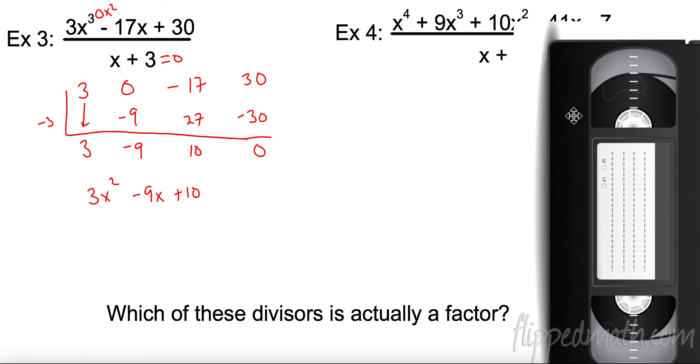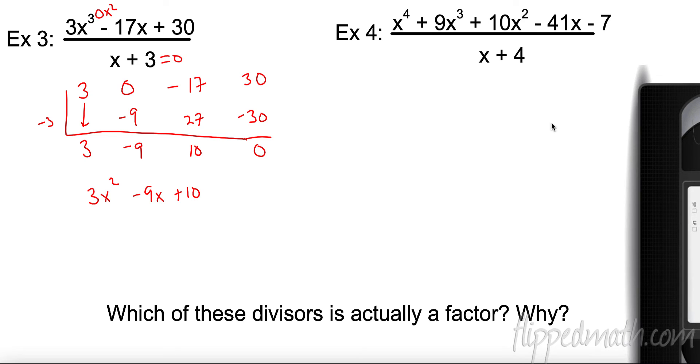All right, let's try another one over here. What is the long one? All right. 4, 3, 2, 1. All right, I got everything. That's good. That's the good news. So here we go. 1, because it's not written. 9, 10, negative 41, and negative 7. All right, and set this equal to 0. So I'm going to divide by negative 4. So I go down. I have 1. Negative 4 times 1 is negative 4. 9 plus negative 4 is 5.